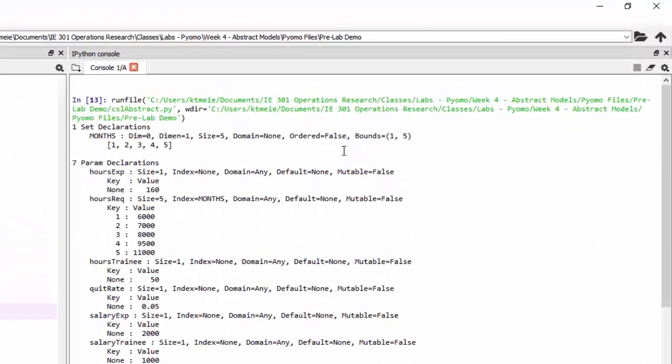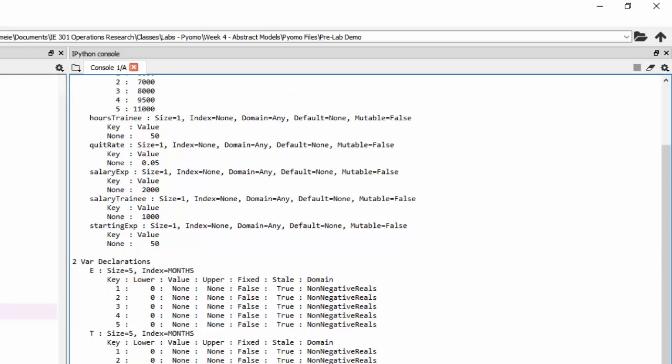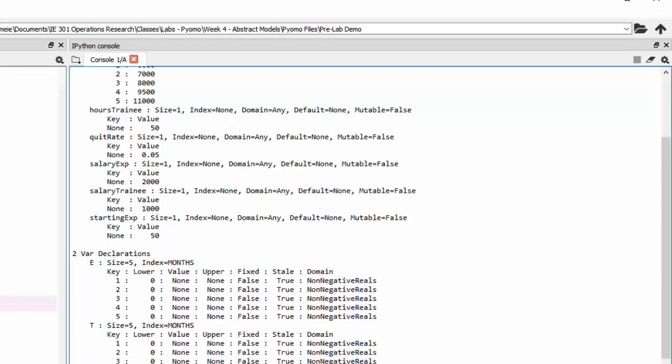So over here I can see information about my model. I can see that our months set has five values in it. And I can see information about the parameters. For example, hours_exp is going to have a value of 160. And hours_required has five different values, one for each month. And the values are different for each of those months. You can see the other parameter values too. We can see that it created decision variables. For the decision variable e, it created five. And for the decision variable t, it also created five.